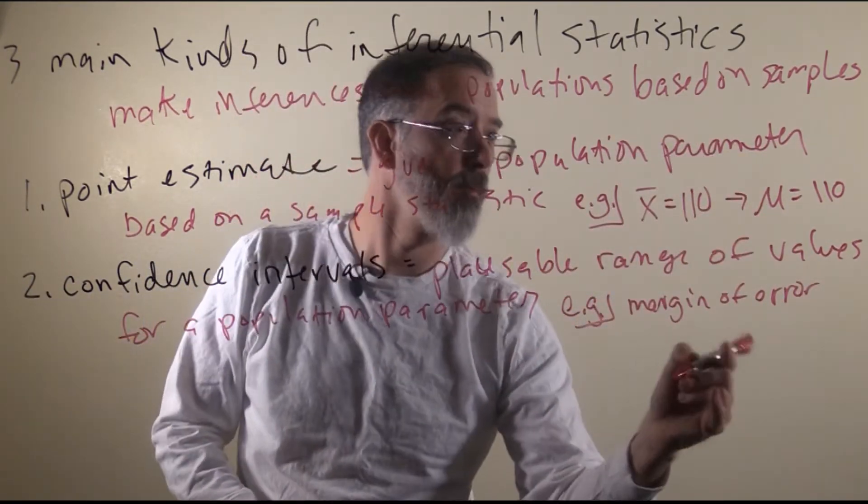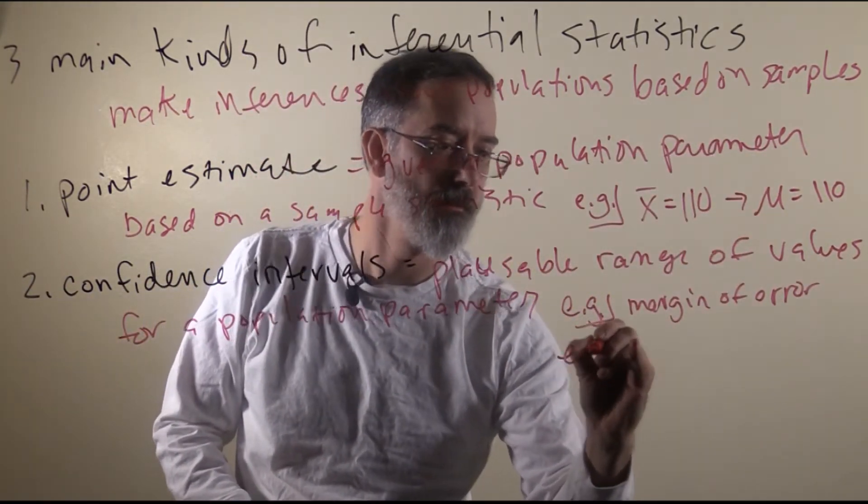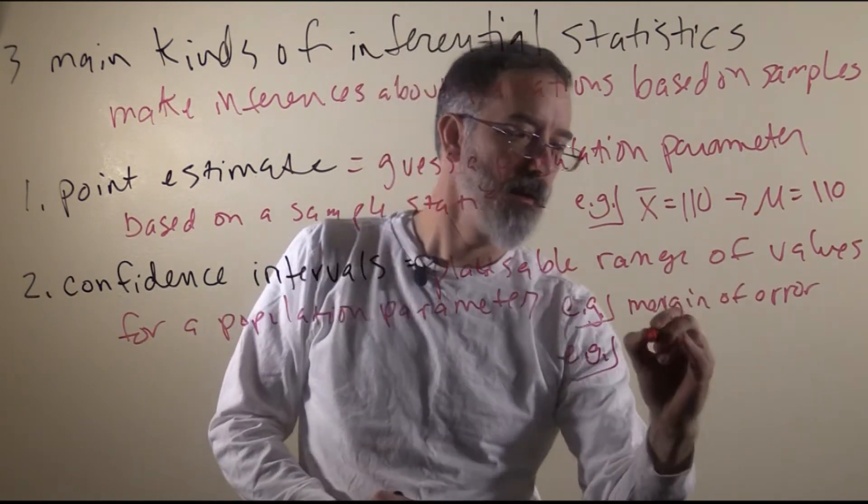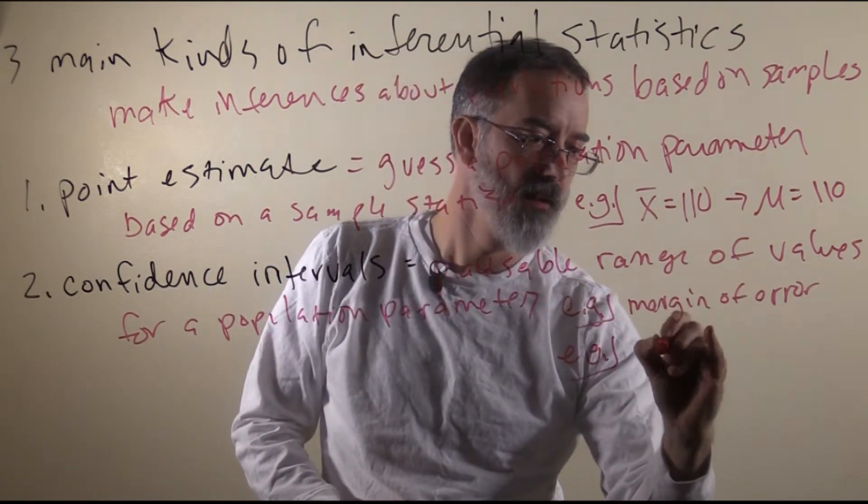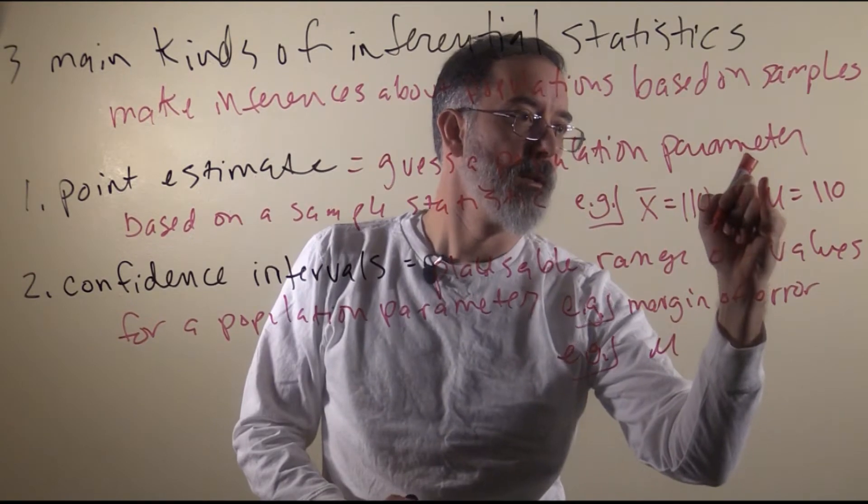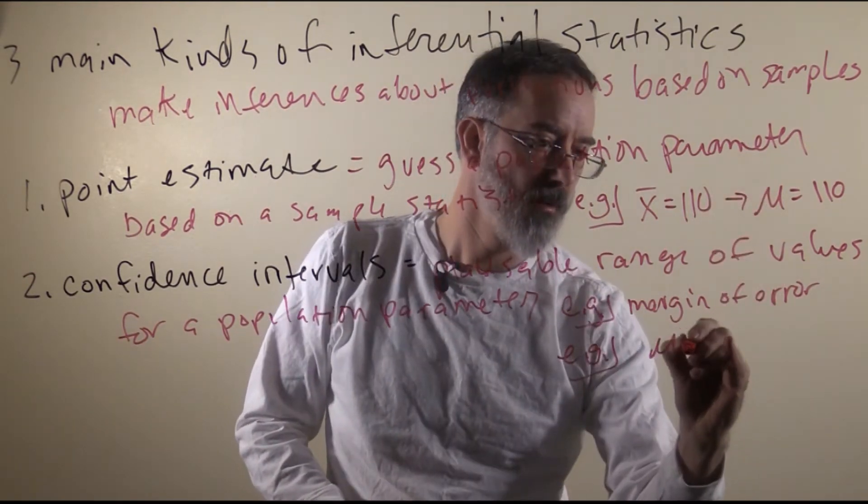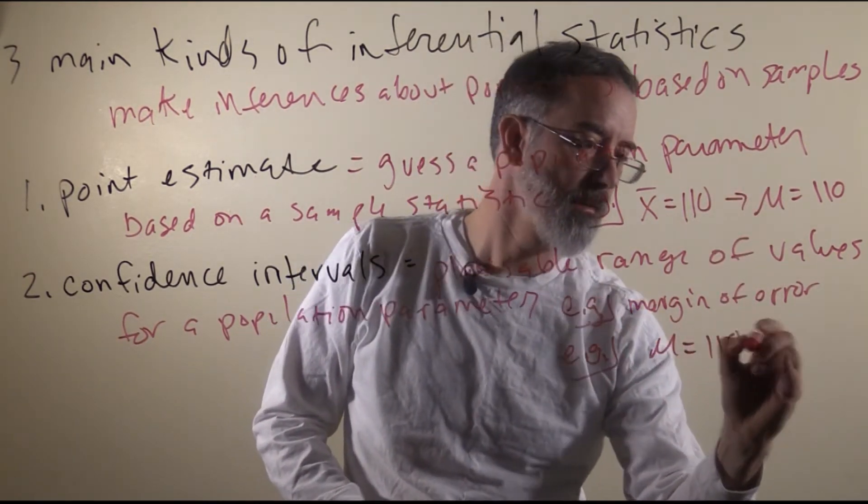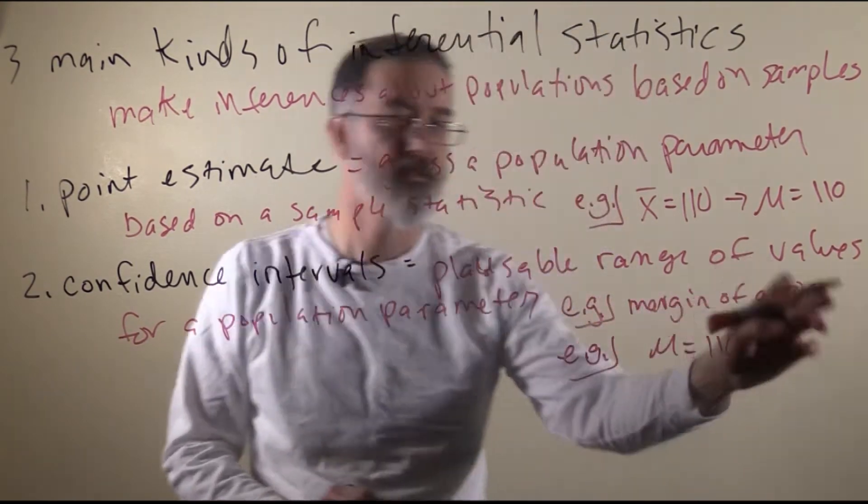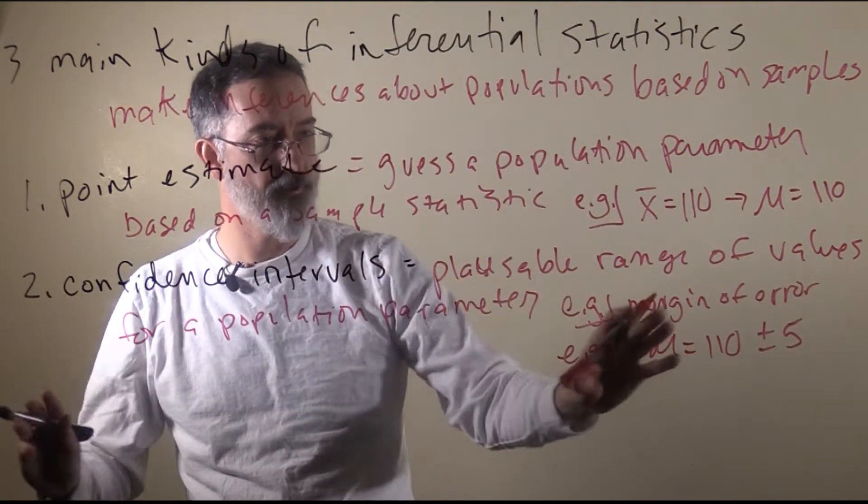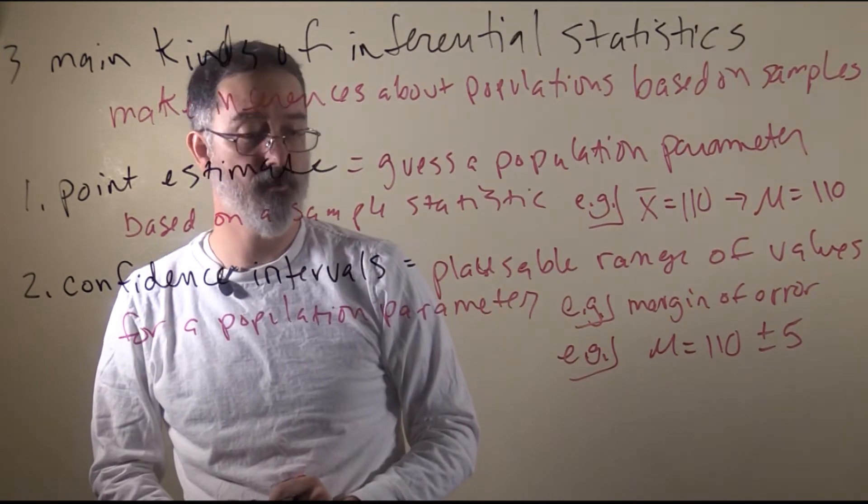Or in this case, what we might have is something like, our guess is that the population average IQ for SUU students is 110 plus or minus five IQ points. It does not actually quite look like that, but that is generally the idea of how these confidence intervals would look.